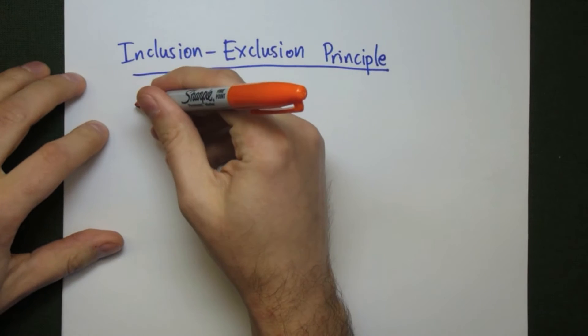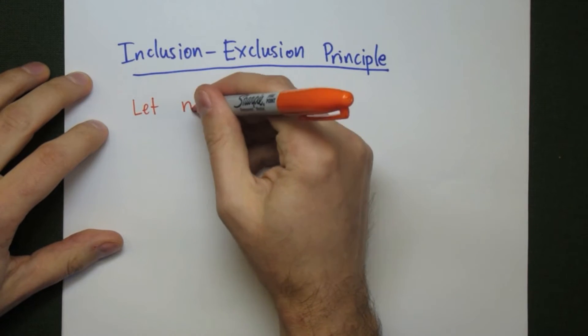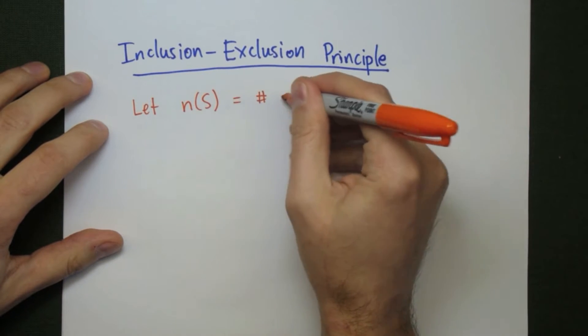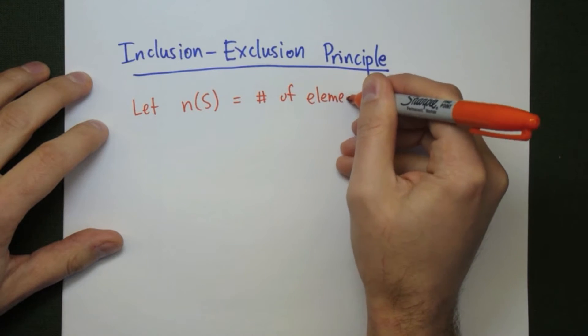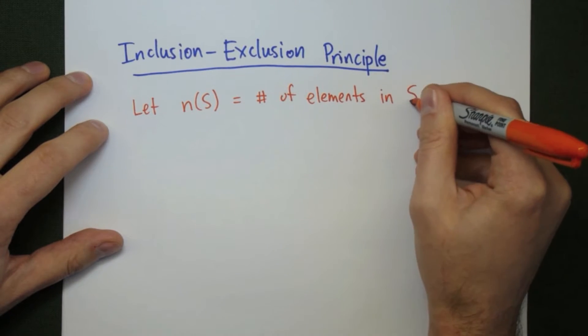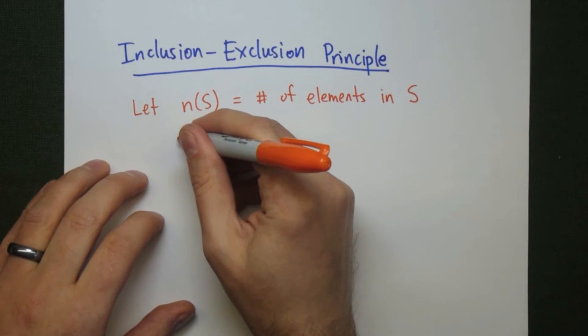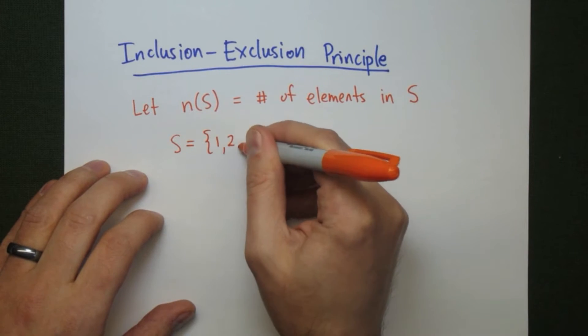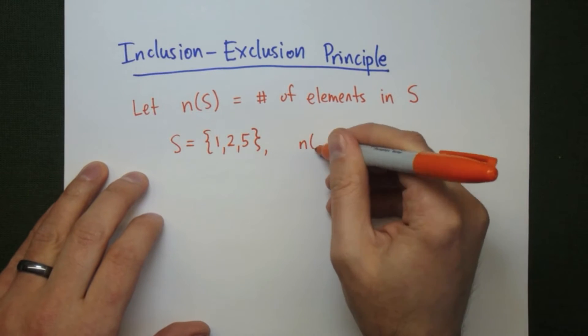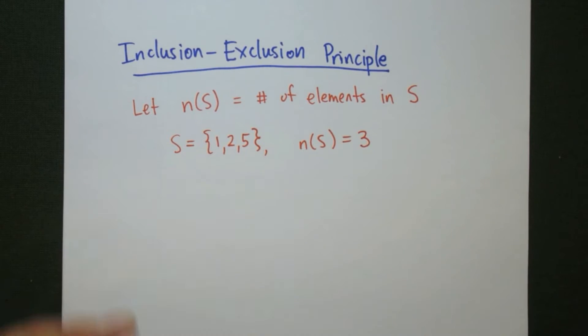We're going to talk about how to find out how many elements are in a set. So let N be the number of elements in a given set S. As an example, if S is the set containing the numbers 1, 2, and 5, then N is going to be 3, 3 elements in S.